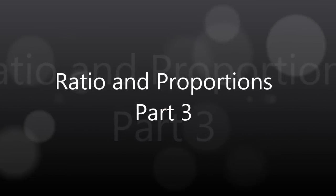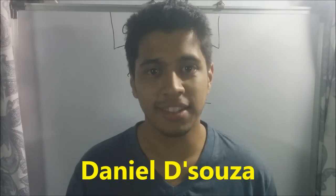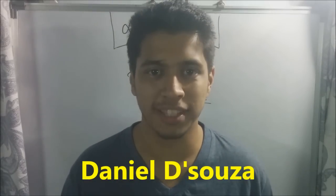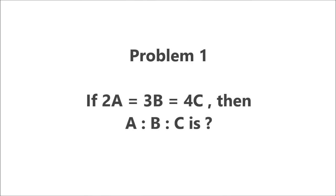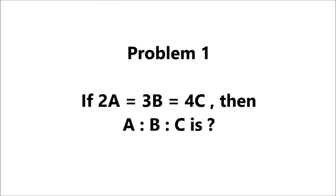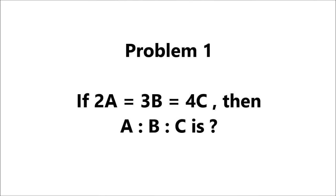Ratios and Proportions, Part 3. Hi, I am Daniel Schroeser and welcome to our community gathering. This is part 3 on the lecture on Ratio and Proportions. Here's the first sum. Problem 1: If 2a is equal to 3b is equal to 4c, then a:b:c is?